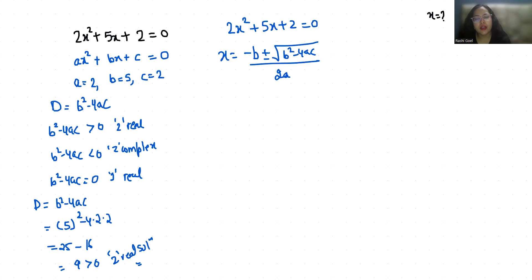So -5 ± √(b² - 4ac). We already calculated the value of b² - 4ac, that is 9, by 2 times 2. So -5 ± √9 is 3 by 4.